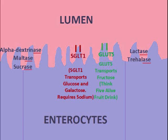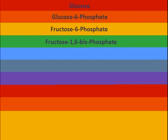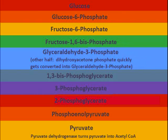SGLT1 is key — transports glucose into me. First glucose, then glucose-6-phosphate, then fructose-6-phosphate, fructose-1,6-bisphosphate, glyceraldehyde-3-phosphate, 1,3-bisphosphoglycerate, then 3-phosphoglycerate, next 2-phosphoglycerate, phosphoenolpyruvate, pyruvate.